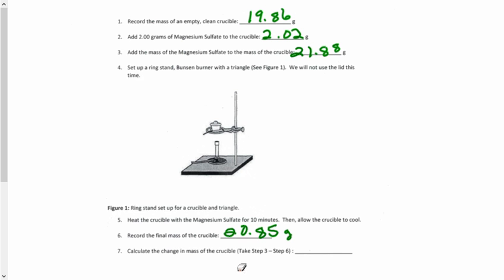To calculate the change in mass, we're going to take our beginning mass here in step three and subtract our final mass in step six. So we'll take 21.88 minus 20.85, and that gives us 1.03 grams. Now that change is actually grams of water, so I'm going to write H2O next to that.